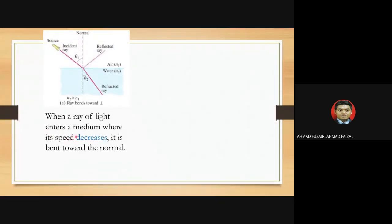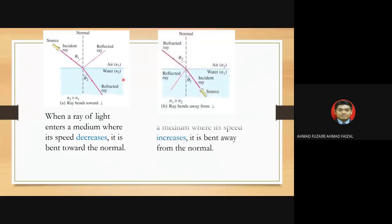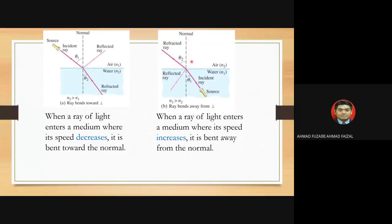When a ray of light enters a medium where the speed decreases, it is bent toward the normal — for example, going from air to water. Conversely, when light enters a medium where its speed increases, it is bent away from the normal — going from a higher density medium to a lower density medium. There is no change in direction of propagation if there is no change in index of refraction.